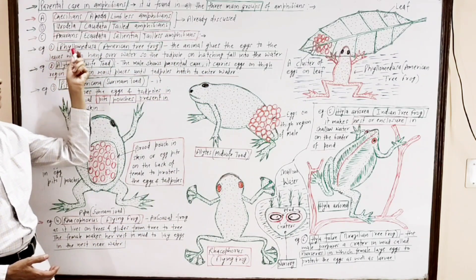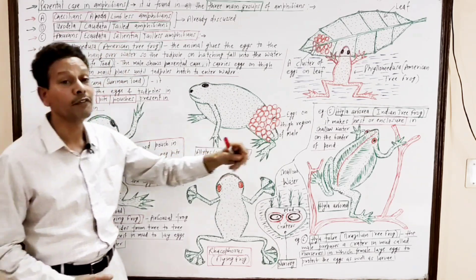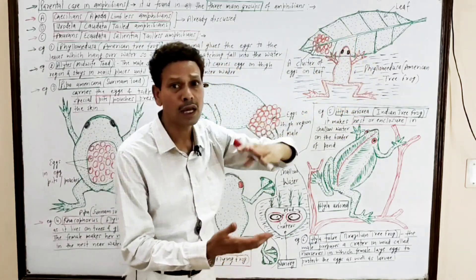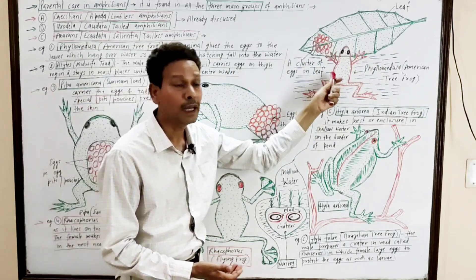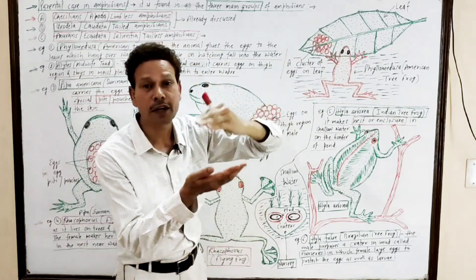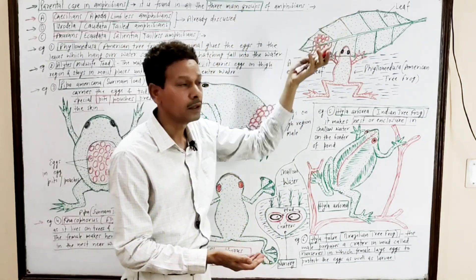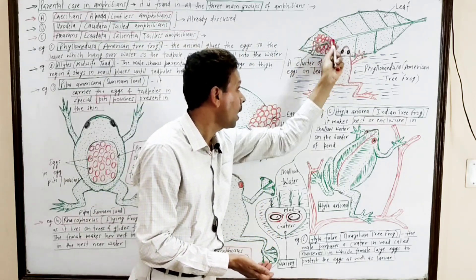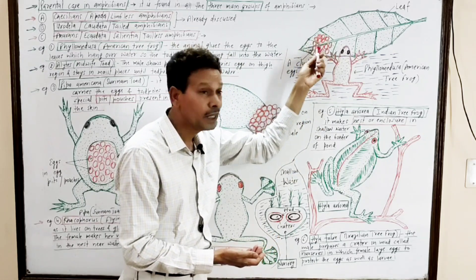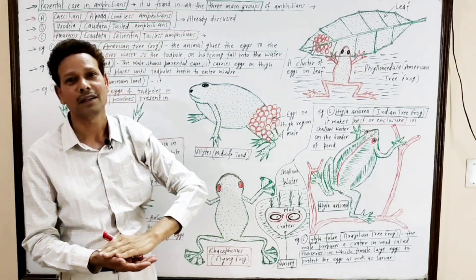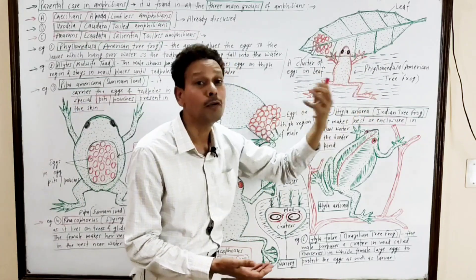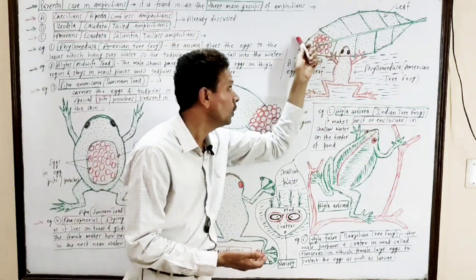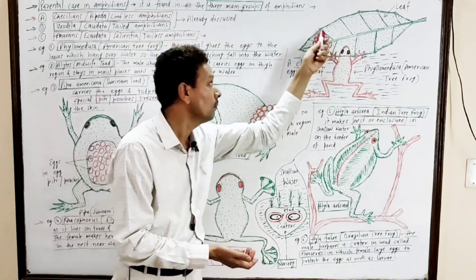The first example is Phylomedusa, the American tree frog. As shown in the diagram, the female glues her eggs on the surface of leaves which remain just above the water. After hatching, the larvae from these eggs directly fall into the water.